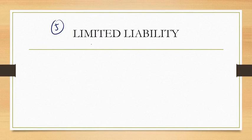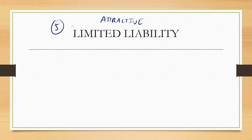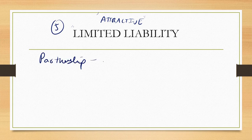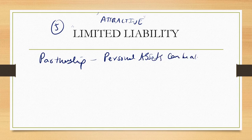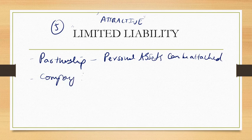The fifth characteristic of a company is limited liability, which is the most attractive characteristic. If you look at a company, the liability is limited to the share which you have contributed. In a partnership firm, the partner's liability is unlimited and even personal assets can be attached for any mistakes of the firm. However, in a company, the biggest advantage is limited liability.